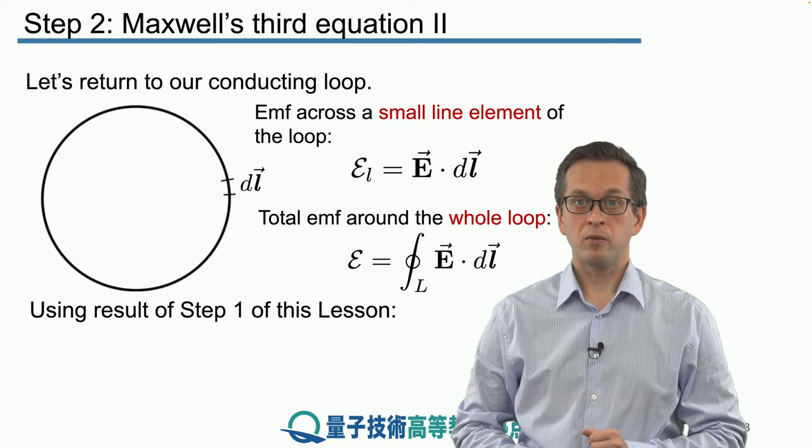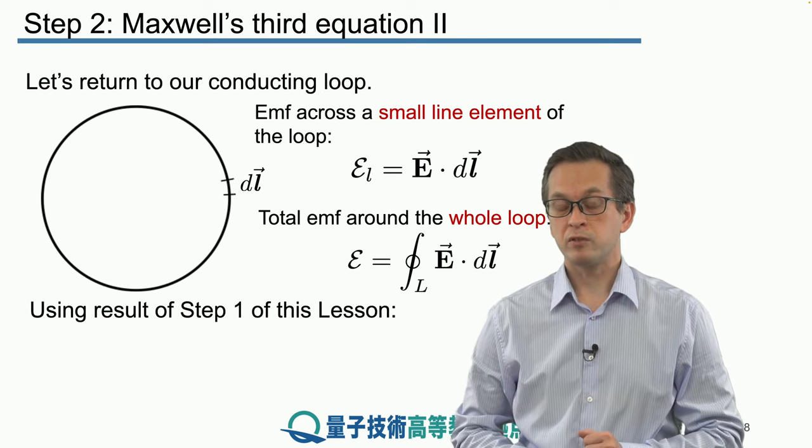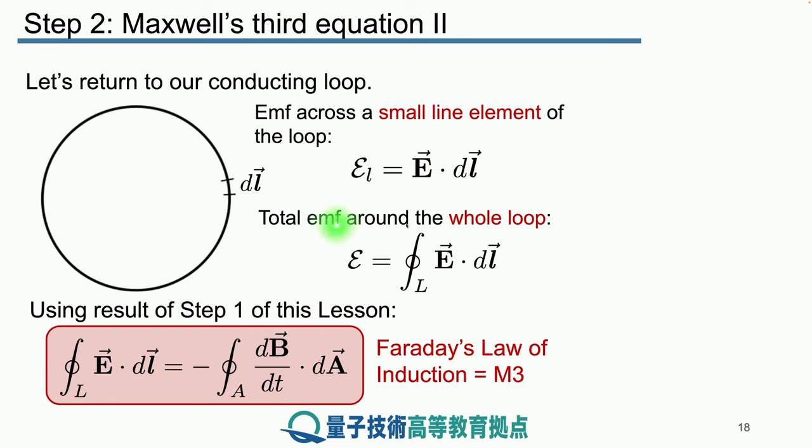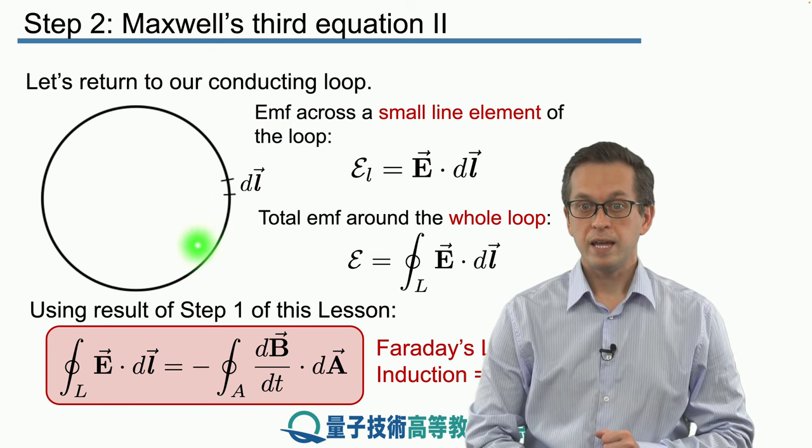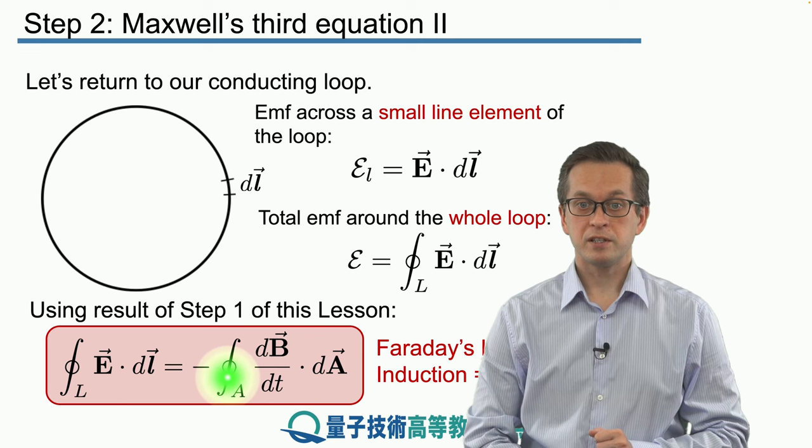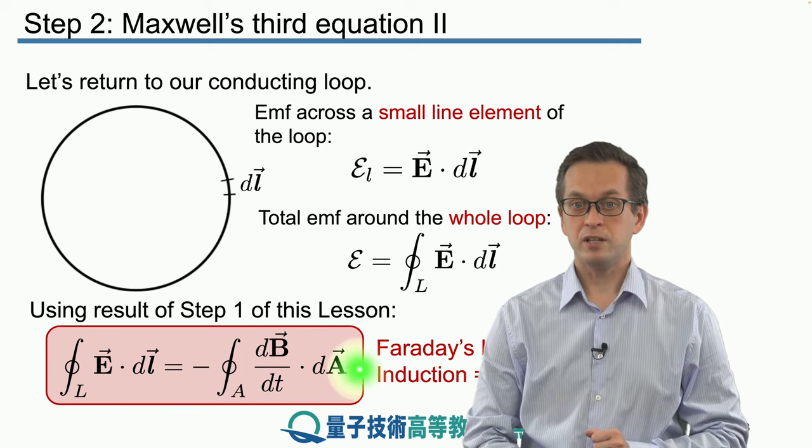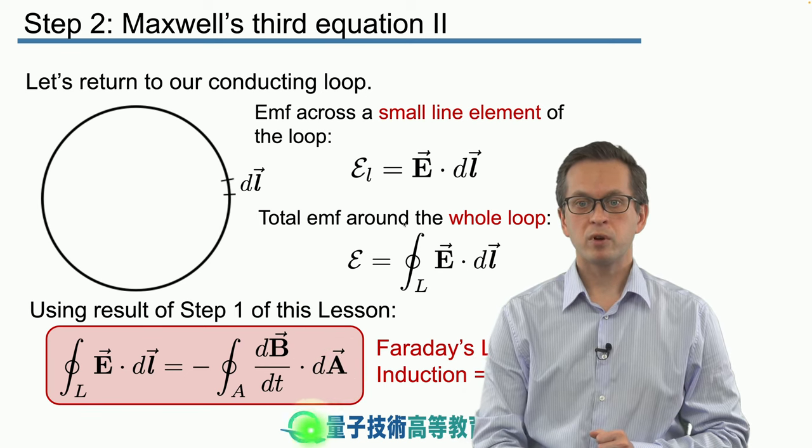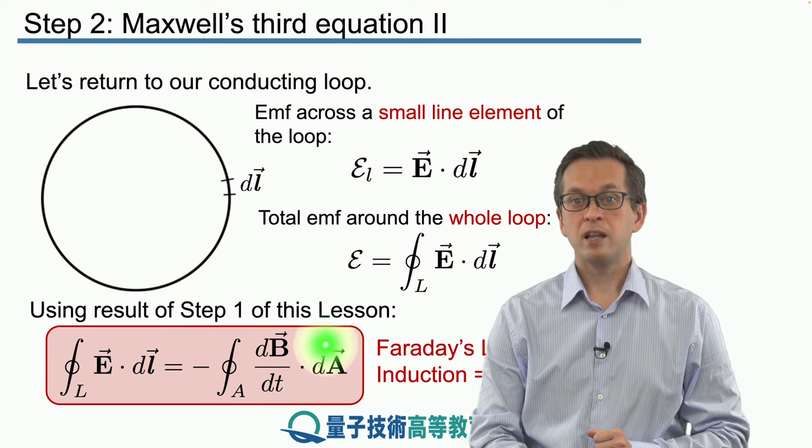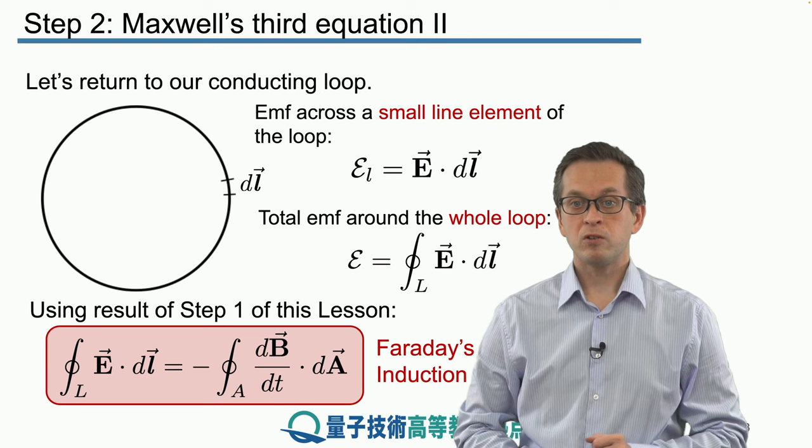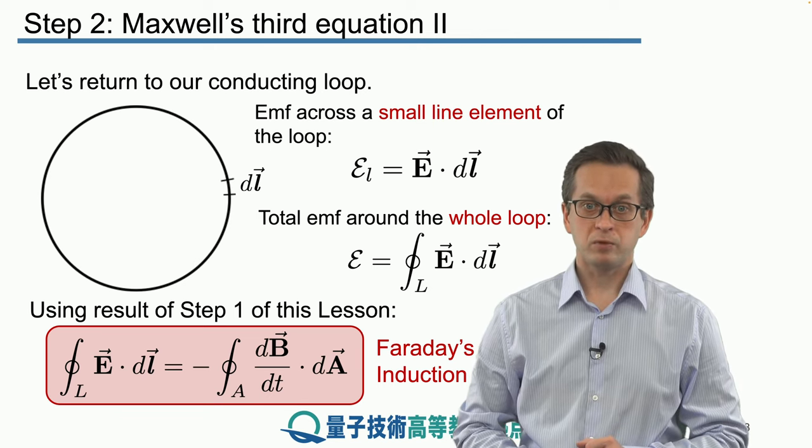And this way, combining this result with our previous result from step one, we arrive at the following expression. We arrive at Maxwell's third equation. We have that the integral of E dot dl around this closed loop is equal to the negative of the surface integral of the change of the magnetic field dot dA. So this expression here, before we were writing in terms of the magnetic flux, now we are explicitly writing it in terms of the magnetic field. And this law is known as Faraday's law of induction or Maxwell's third equation.